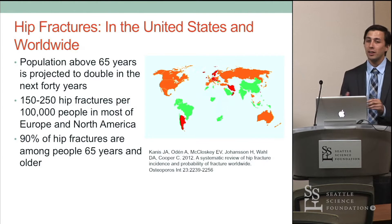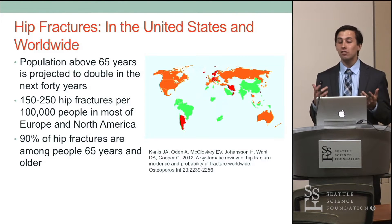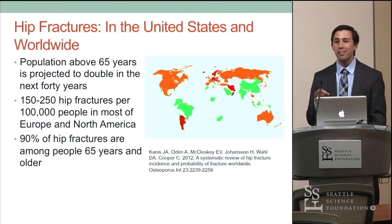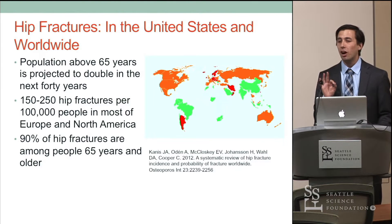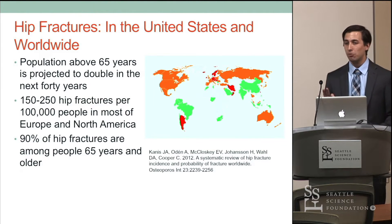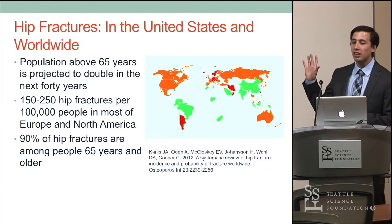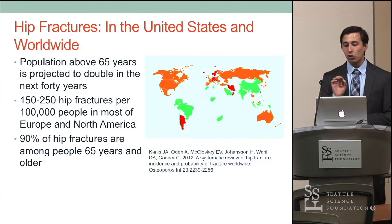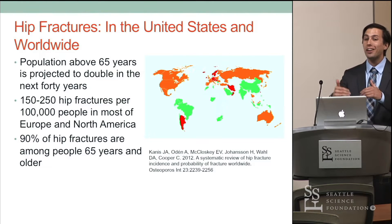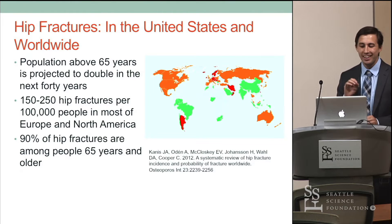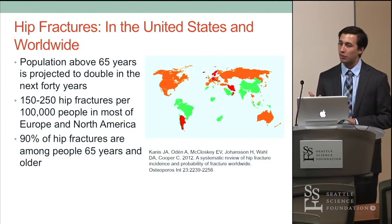Hip fractures worldwide. The population above 65 is projected to double in the next 40 years, and that's really your key population when thinking about hip fractures. It was demonstrated that about 150 to 250 hip fractures per 100,000 people per country in most of the industrialized world. You can see that in the image — countries in orange are in that range, and those in red are above it.